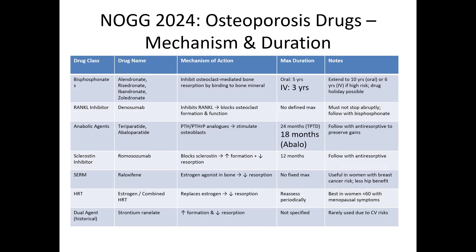Next are the anabolic agents — teriparatide and abaloparatide — which are PTH or PTHrP analogues that stimulate osteoblastic bone formation. The maximum duration of treatment for teriparatide is 24 months, whereas it is 18 months for abaloparatide. These should be followed with anti-resorptive agents to help preserve the gains in bone mineral density.